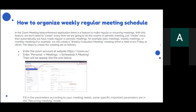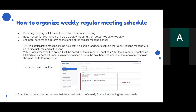Fill in the parameters according to your meeting needs. Some specific important parameters are in the recurring meeting mode. Under Recurring Meeting, tick to select the option for a periodic meeting. Under Recurrence, select Weekly. Here you can determine the range of the regular meeting period.